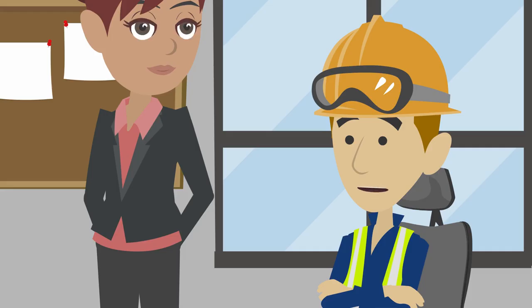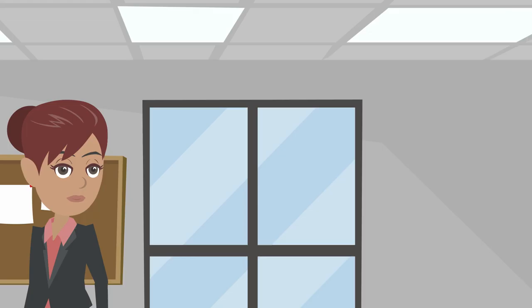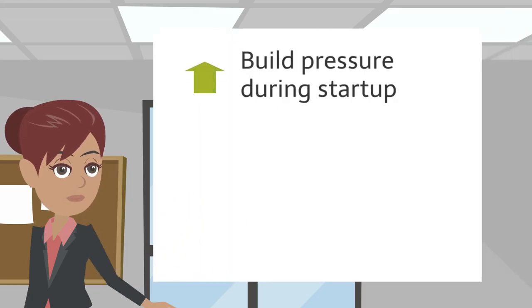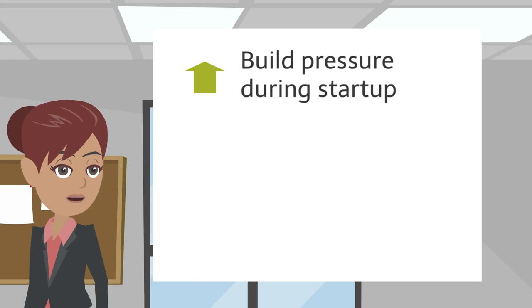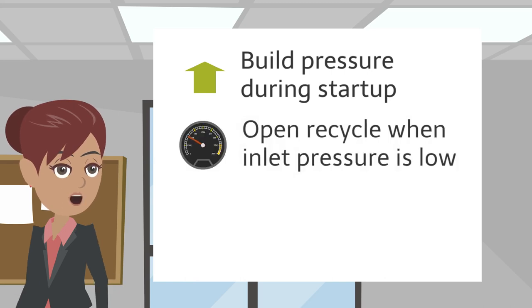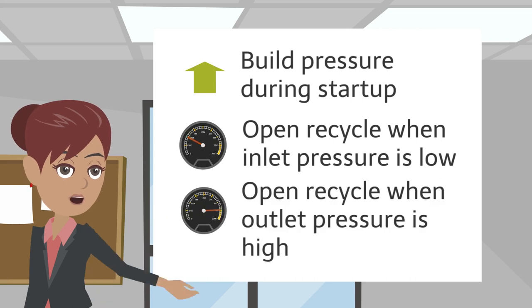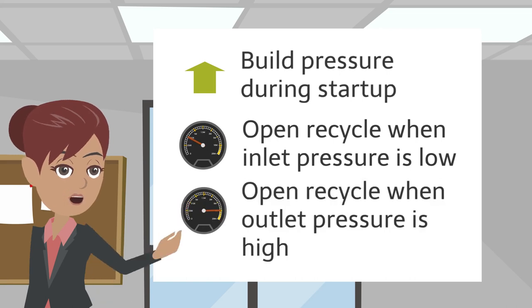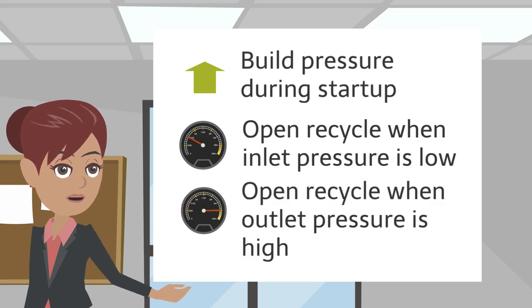Why do we have a recycle line if opening it will overpressure the inlet side? The recycle line is important for starting up a compressor to build up operating pressures. It is also used to control fluctuations in pressure by opening when the compressor inlet pressure is too low or outlet pressure is too high. The compressor will not overpressure if the recycle valve opens and there is still a flow path through the compressor.